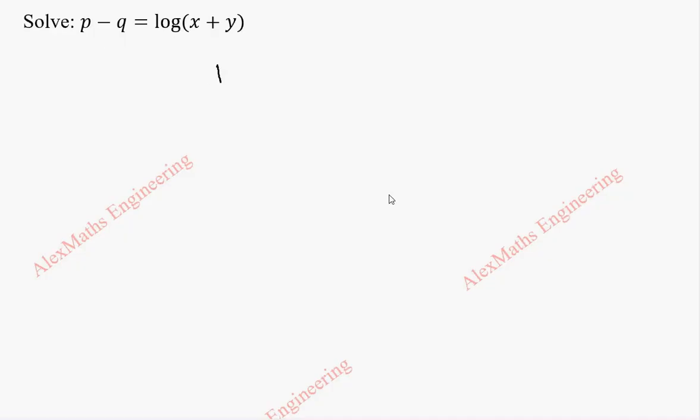This is of the form capital P into small p plus capital Q into small q equal to R. When I rewrite this equation, I take small p and with the small p I am going to write it into 1 so that by comparison capital P is 1.